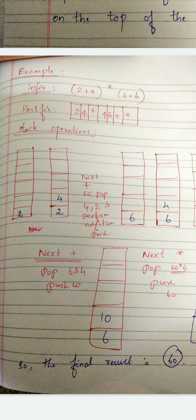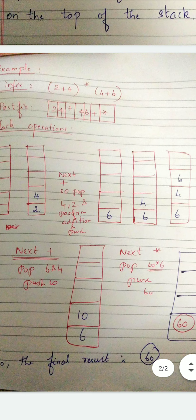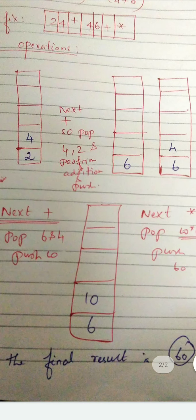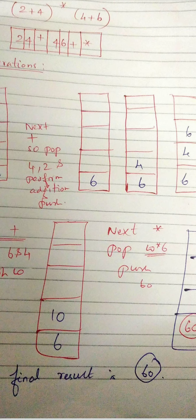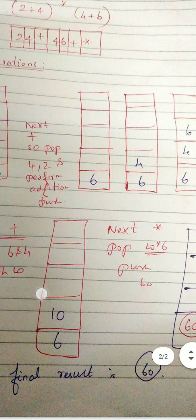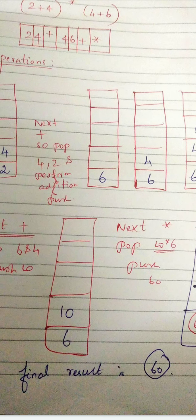Again operand, so you have to push inside. Again operand, so you have to push. Now I am coming with the operator plus. So what do you have to do? You have to pop out the last two operands, the most two operands. The most two operands are 6 and 4. And you should do addition and the result should be pushed back again.